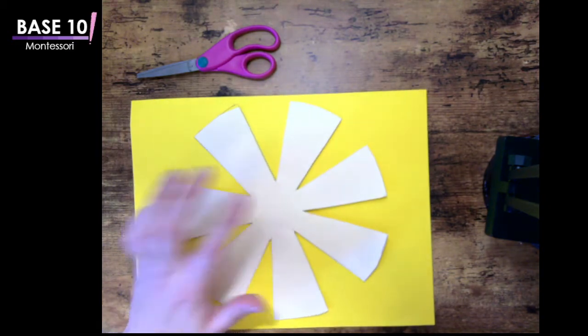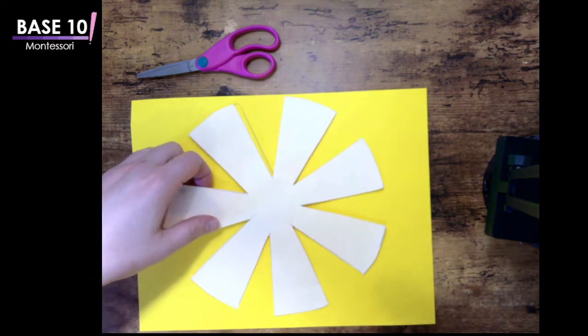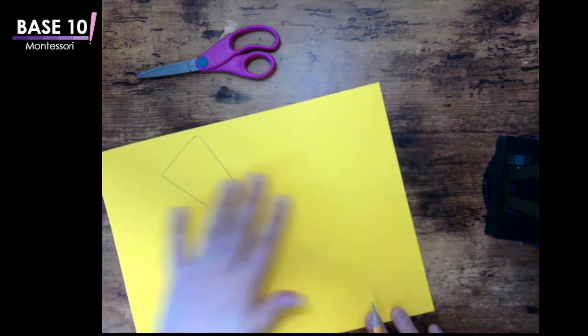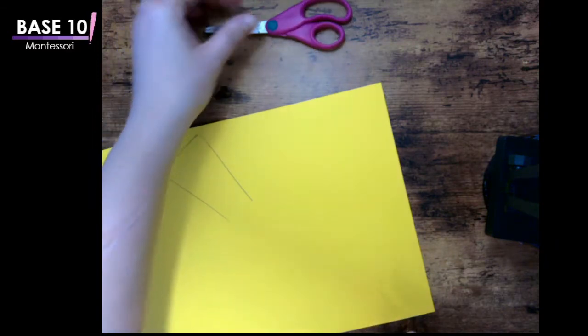And so I'm not going to go through all the tracing for you because that would take a really long time. And I'm trying to keep my videos a little bit on the shorter side. So once you get it all traced out onto your paper, you're going to want to cut it out with scissors. And let me show you what that final product looks like.